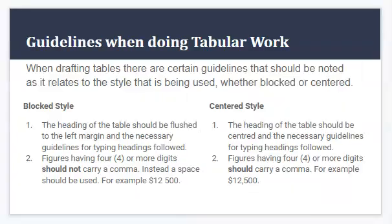Now we need to ensure that when we are drafting our tables or doing our tabular work, there are certain guidelines that should be noted as it relates to the style being used, whether the blocked style or the centered style. When doing the block style tabular work, we should ensure firstly that the heading of the table is flushed to the left margin and the necessary guidelines for typing headings are followed. Secondly, figures having four or more digits should not carry a comma — a space should be used instead. For example, 12,000 space 500.